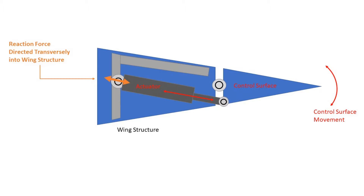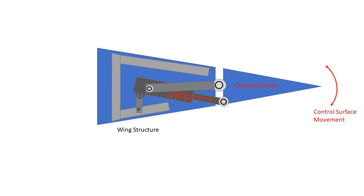Composite wing structures, on the other hand, cannot handle transverse loading due to their anisotropic nature. This necessitates a new actuator design: the reaction link actuator. In this case, forces are reacted into the metal control surface hinge instead of the composite wing structure.